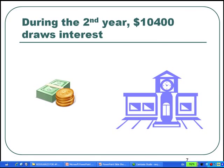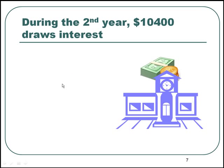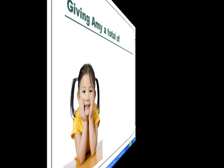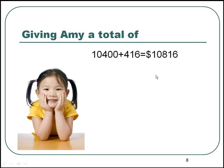During the second year, the bank adds the interest of 0.04 times $10,400, which is equal to $416, to her $10,400 account, giving Amy a total of $10,400 plus $416, which is equal to $10,816.